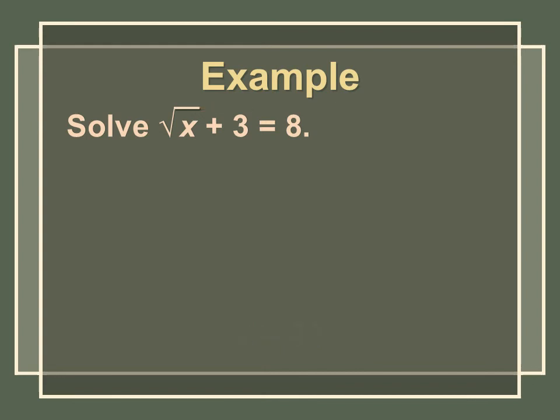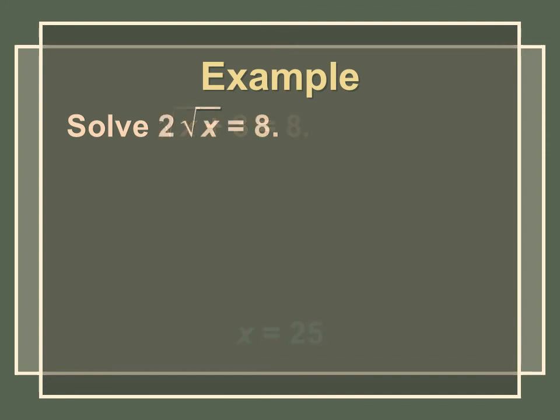Go ahead and try this one. This one's a little different because your radical isn't isolated. The very first step is to isolate the radical by subtracting 3 from both sides, giving √x = 5. Then, squaring both sides gives x = 25. Now try the next one. The radical isn't isolated either — you need to divide both sides by 2, giving √x = 4, and then squaring both sides gives x = 16.